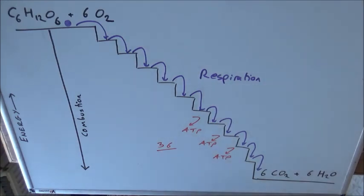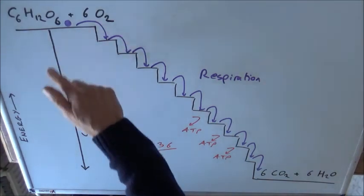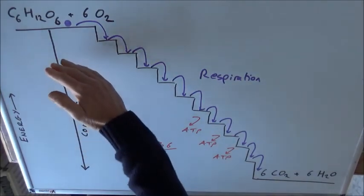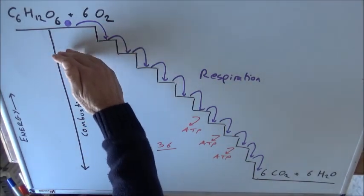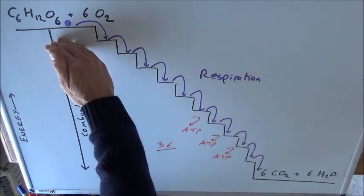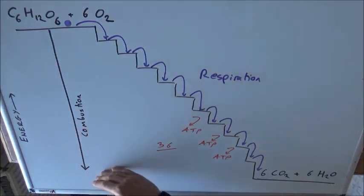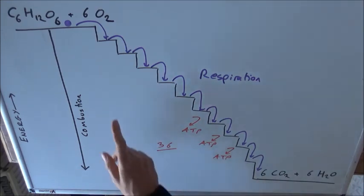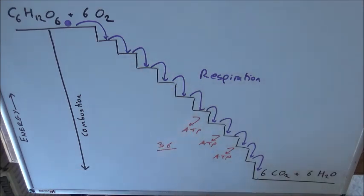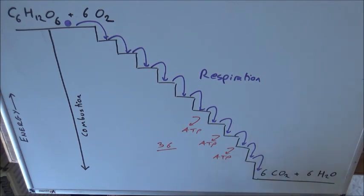It's also like a waterfall: if you just let water tip off a waterfall, the gravitational potential energy is converted to kinetic energy, which is eventually dissipated as sound and heat energy. But what you could do is send it down through a series of turbines, which use the energy to do something useful — turn turbines and generate electricity. That's really what's happening in respiration: you're putting that energy to use.